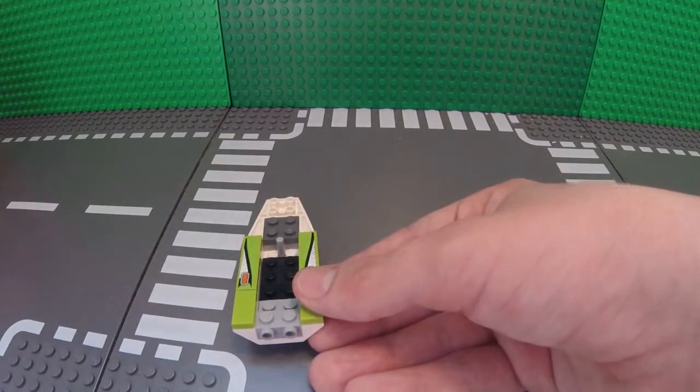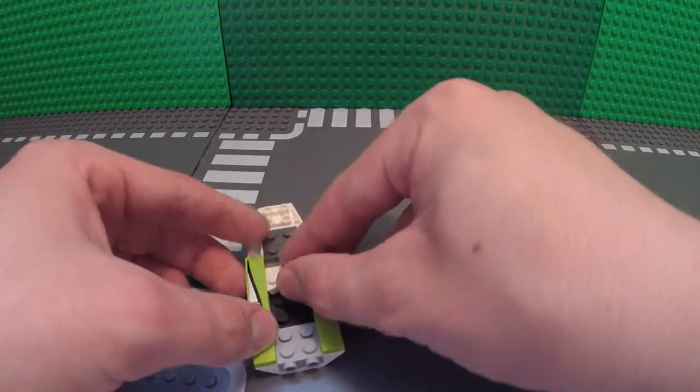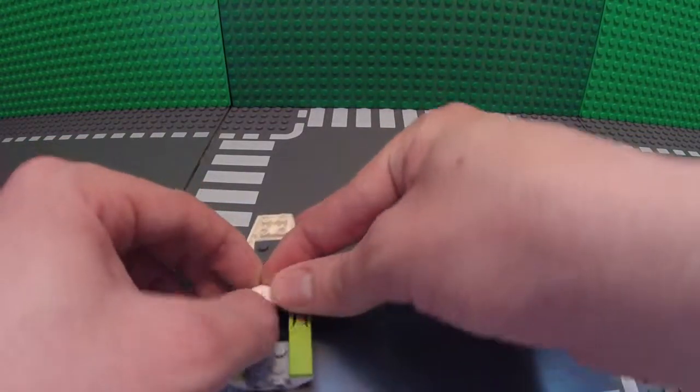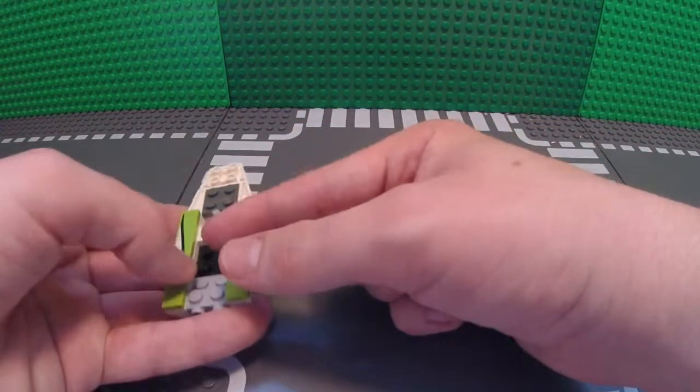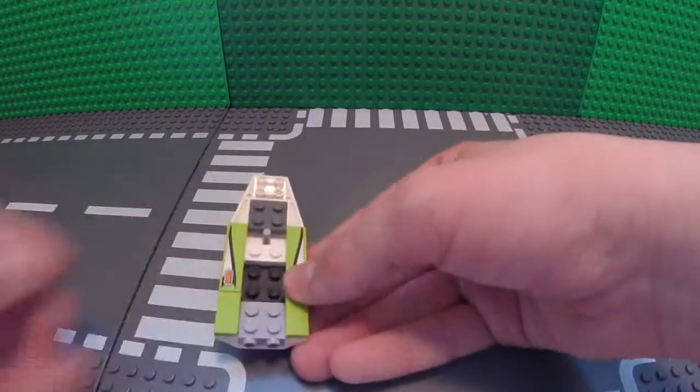Now take another of your 1x2 pieces and place it right roughly at the front of the 2x3 plate.